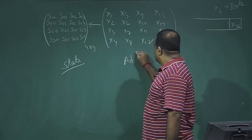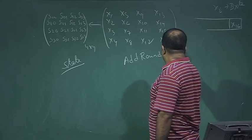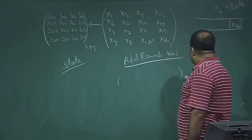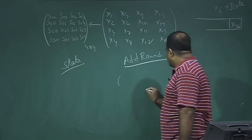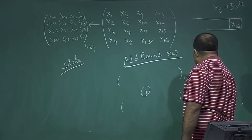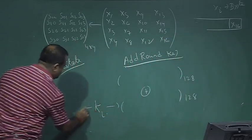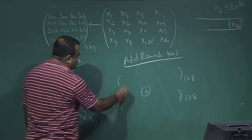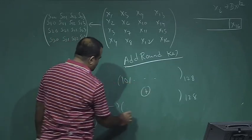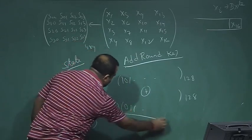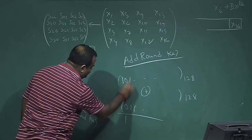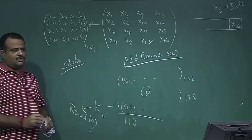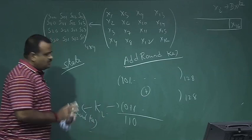For the Add Round Key operation, we have a 128-bit state and a 128-bit round key (the i-th round key). Add Round Key is simply a bitwise XOR of the state with the round key — for example, 101 XOR 011 gives 110. There is no carry; it is purely a bitwise XOR. This is the Add Round Key operation.